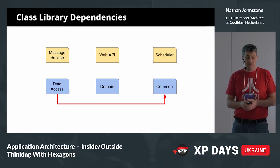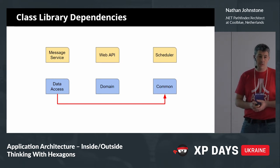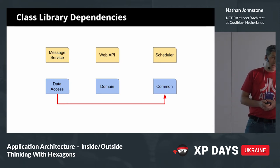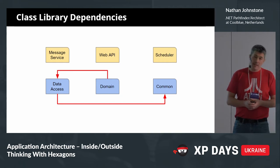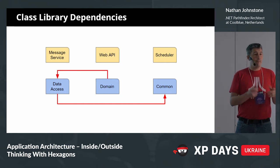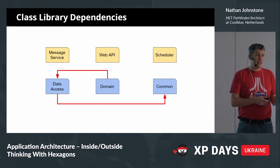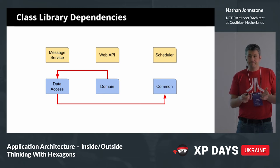Looking at the dependencies between assemblies: the messaging service depended on everything, the Web API depended on everything, and the scheduler also depended on everything. This isn't inherently bad — at least they're all pointing in the right direction, no circular references. But within the class libraries, there was a dependency from data access to common, and interestingly, a dependency from the domain back to the data access library.